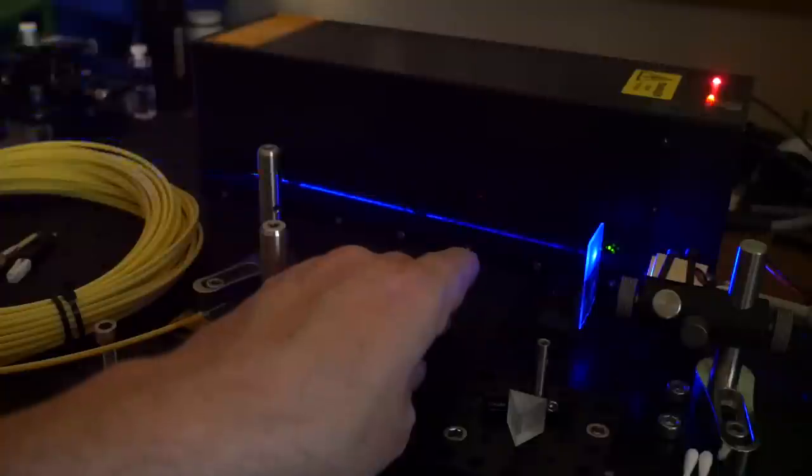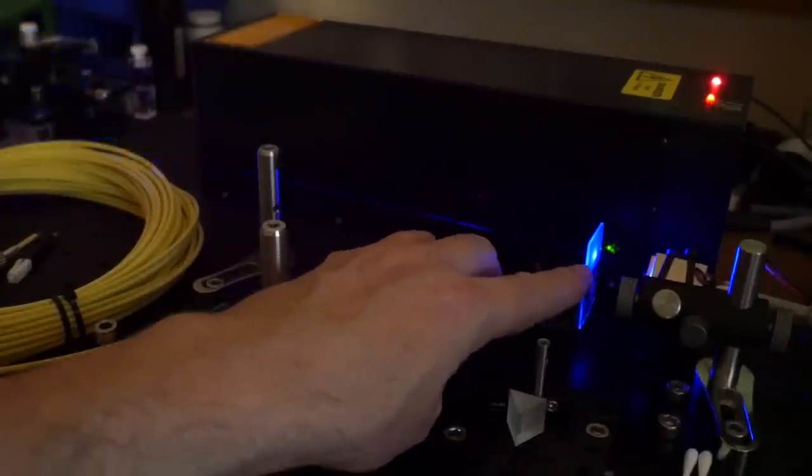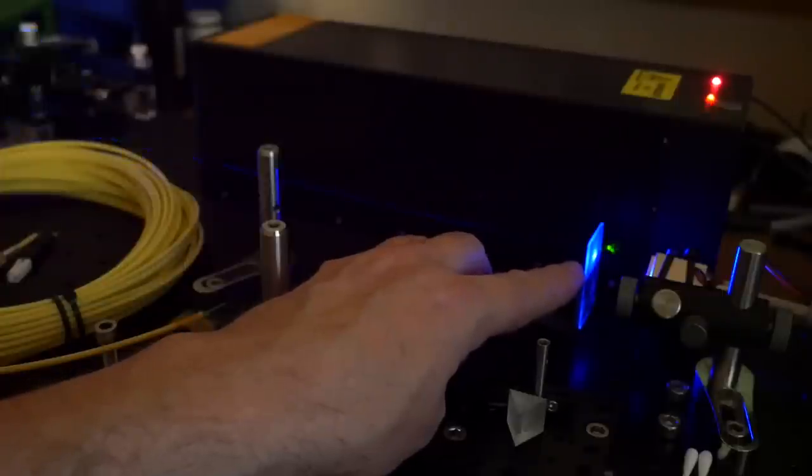So now we're measuring the pulse width of the dye laser. I have my silicon photodiode mounted at the back here but in front of it I've got a ground glass plate so that we're not exposing the actual tiny photodiode itself to this really quite high powered beam. Let's take a look and see what this looks like on the oscilloscope.